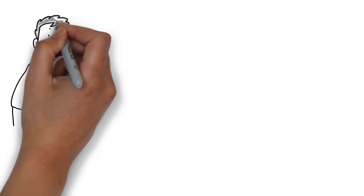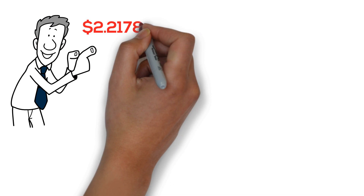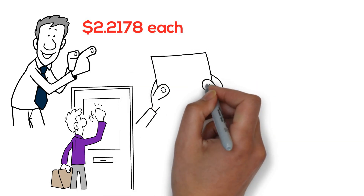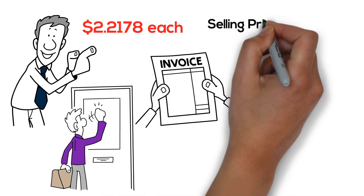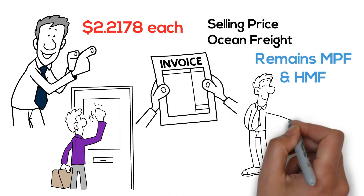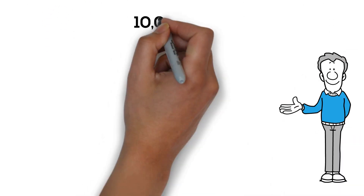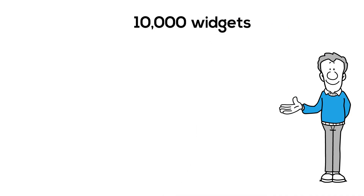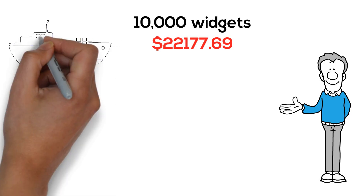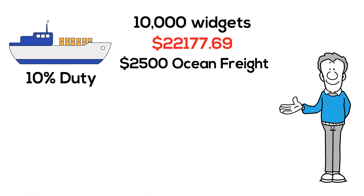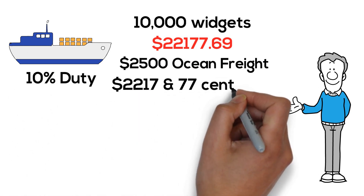So this is what John's calculations may look like. He's going to sell the widgets at $2.22 each, but since Liz wants it delivered and wants John to take care of everything, he's going to add to the selling price: ocean freight, harbor maintenance fee, MPF, what he's going to pay his broker, and what the duty is. The widgets — 10,000 at $2.22 — come to $22,177.69. Then ocean freight is $2,500. Duty at 10% comes to $2,217.77.